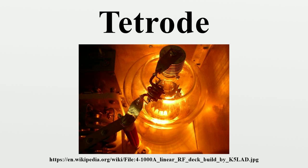This type of tetrode was used in many imaginative ways in the period before the appearance of the screen grid valve revolutionized receiver design. One application is recognizable as an AM telephony transmitter in which the second grid and the anode form a power oscillator, and the first grid acts as a modulating electrode. The anode current in the valve, and hence the RF output amplitude, is modulated by the voltage on G1, which is derived from a carbon microphone.